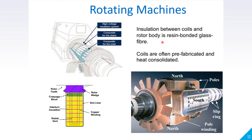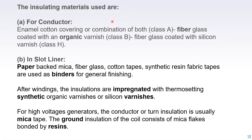Insulation between coils and the rotor body is resin-bonded glass fiber. Coils are often prefabricated and heat consolidated. The insulating materials used for conductors in rotating machines are: enamel, cotton covering, or a combination of both; Class A — fiberglass coated with organic varnish; and Class B — fiberglass coated with silicone varnish. Inside the slot liner, insulation materials used are paper, mica, fiberglass, cotton tape, synthetic resin, and fabric tapes used as binders for general finishing.